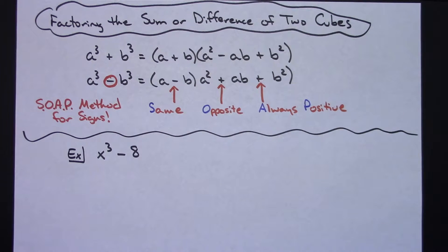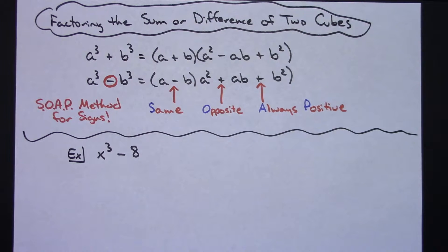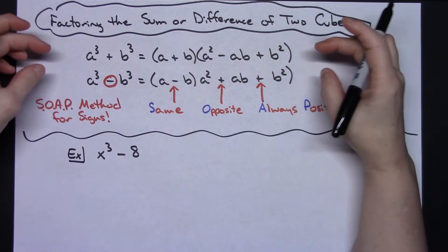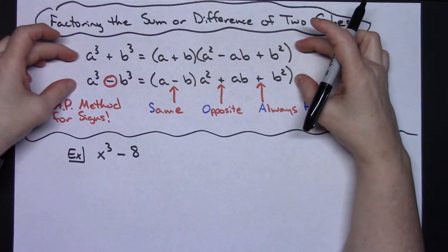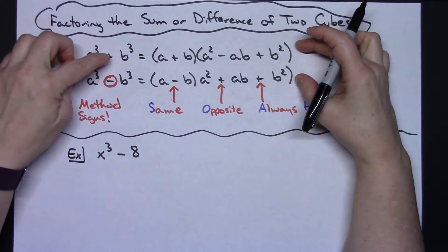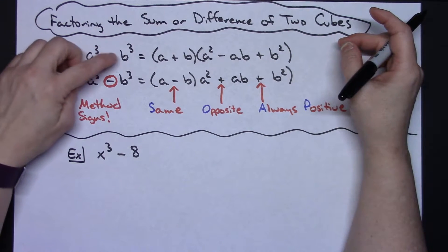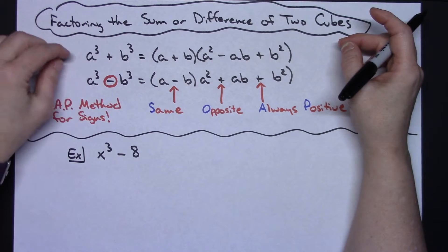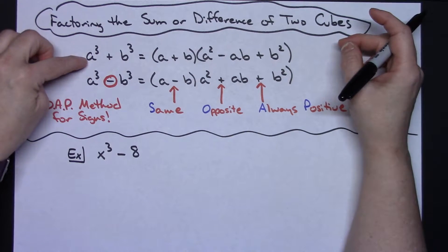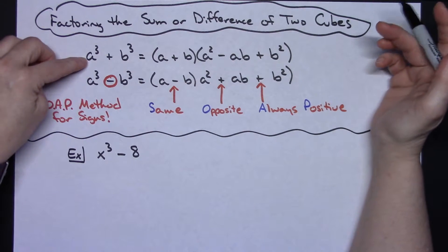In this video I'm going to be taking a look at how to factor the sum or difference of two cubes. We'll do about three examples and we'll take a look at the formula with a nice little acronym to help you remember how to place your signs. These are your formulas for either the sum or the difference of two perfect cubes — A to the third and B to the third are showing that you would have two perfect cubes.